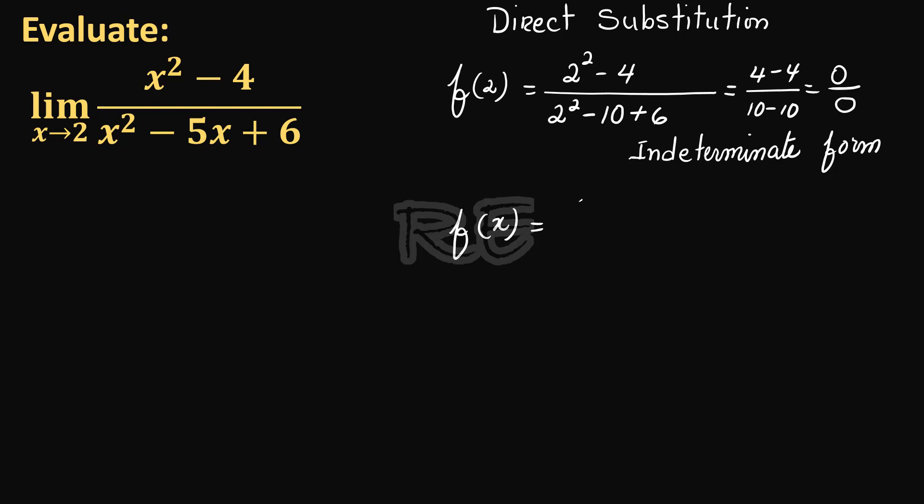We're going to try factoring. f of x: x squared minus 4 is the difference of two perfect squares, x plus 2 times x minus 2. For the denominator, the product of two integers is 6 and their sum is negative 5: negative 3 and negative 2. It's x minus 3 times x minus 2.